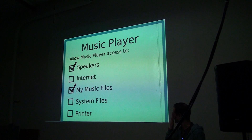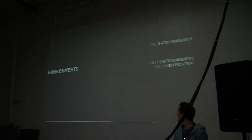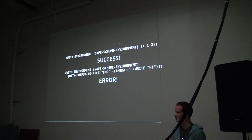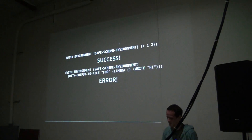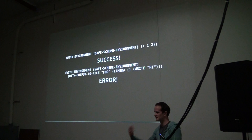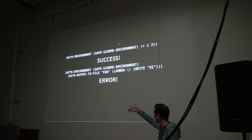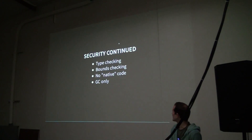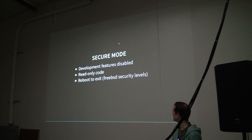Security — you can basically tell things what they're allowed to do, and if they try to do something you haven't allowed, they get an exception. This is based on first-class environments. So if you want a safe environment that doesn't have any I/O, you can say I want that environment, and if you try to call an I/O function, you get an error. Type checking, bounds checking, no native code, GC only — which helps with security. There's also a secure mode and a development mode. In development mode you can redo everything.